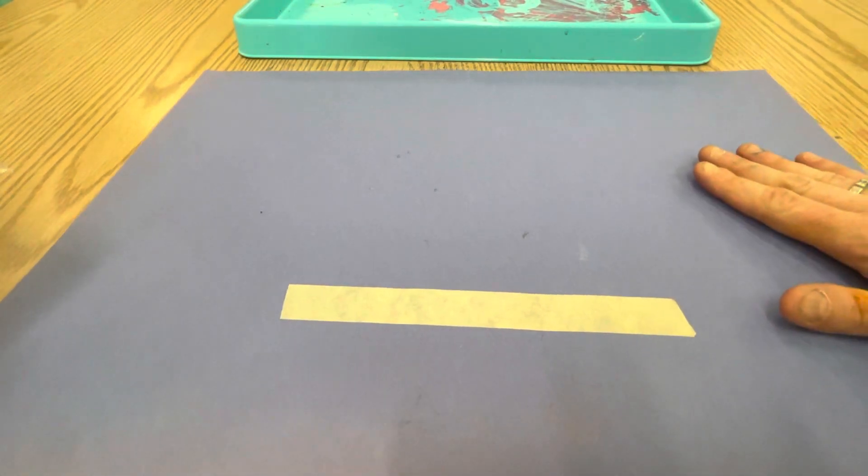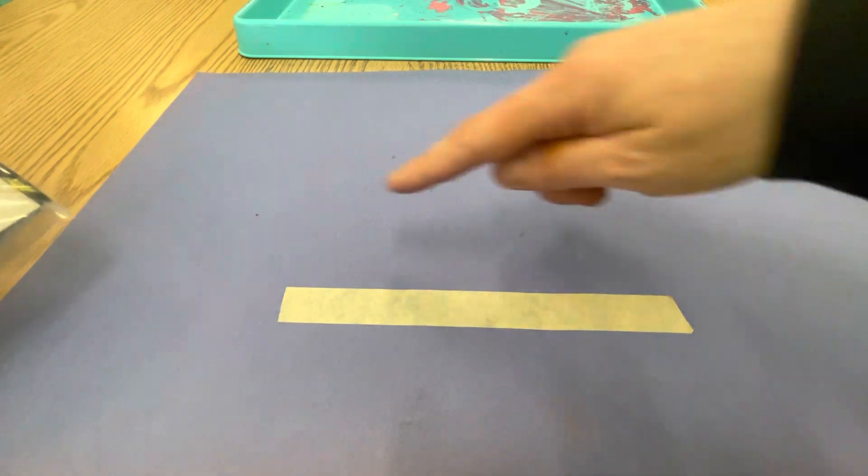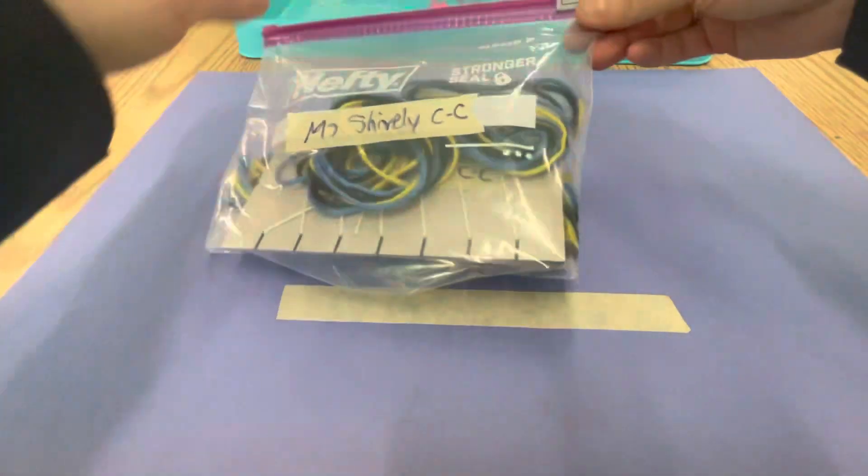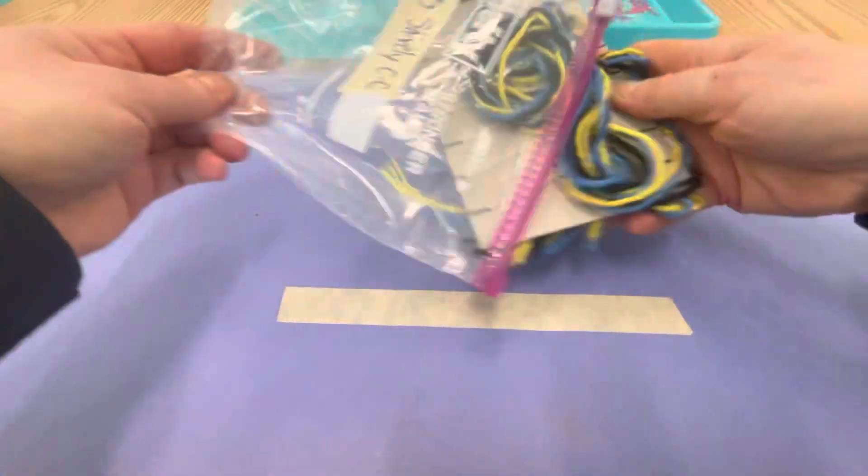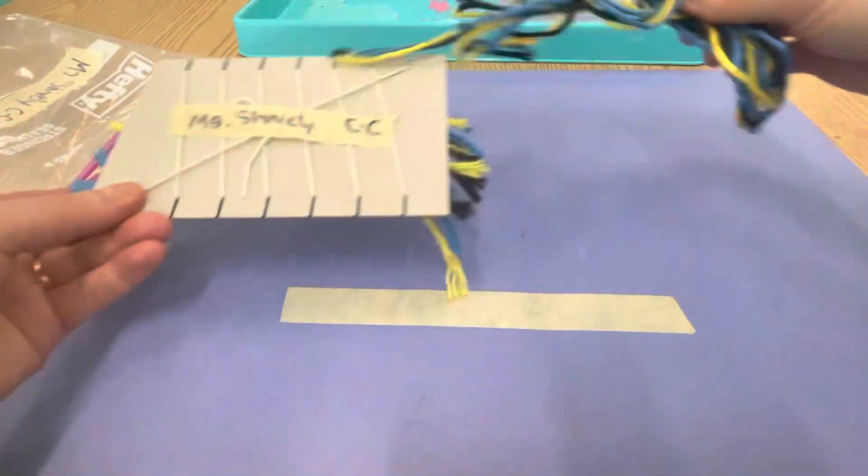All right artists, just like last time, on the way to your table grab a placemat that has the measuring tape on it. Then open your baggie and this time you're going to see your weaving that you started last time on your loom.